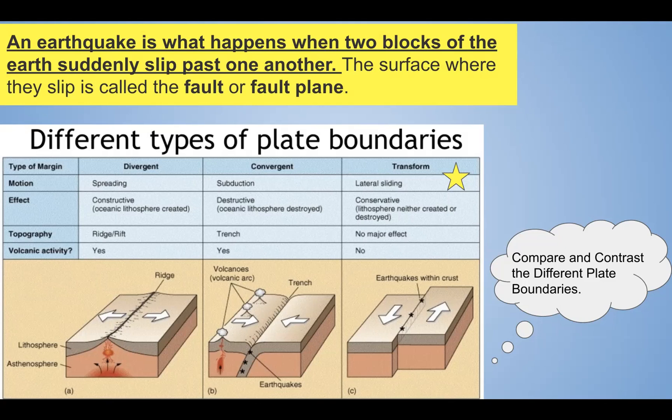Divergent means to pull apart, and you can see from the arrows they're moving away from each other. At divergent boundaries, plates are being pulled apart, causing the crust to stretch. This stretching causes stress called tension, making the rock thinner. At divergent boundaries, we commonly have normal faults, which cause earthquakes — but usually more shallow ones.